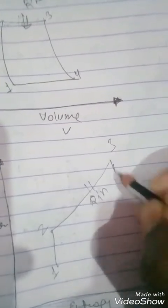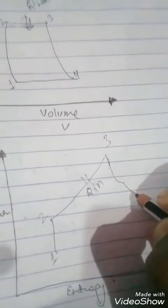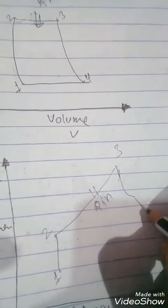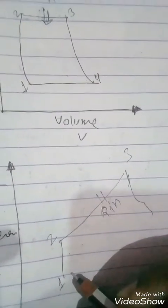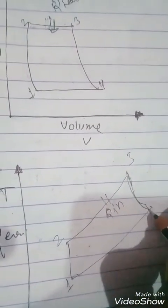Three to four is the process in which the volume increases and the entropy also increases. A less amount of entropy increases. Pressure remains constant in that process.